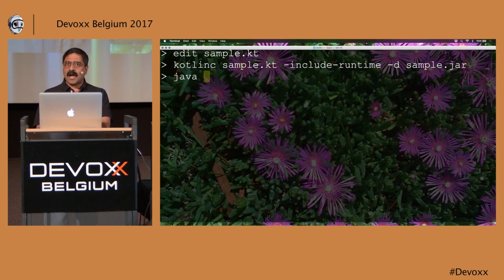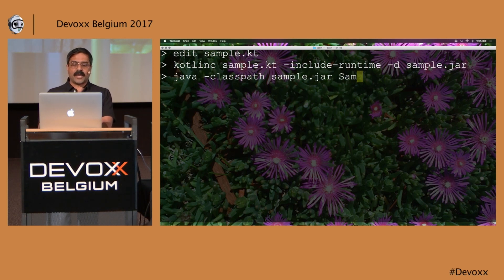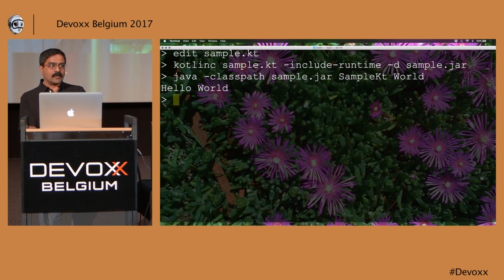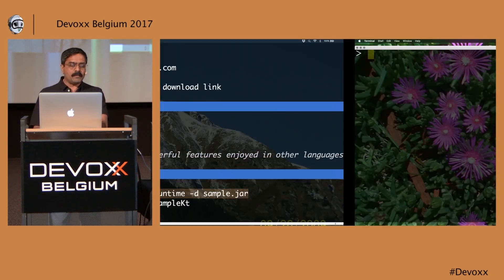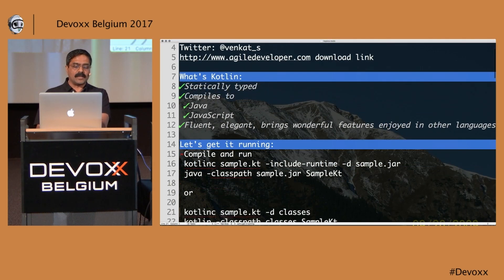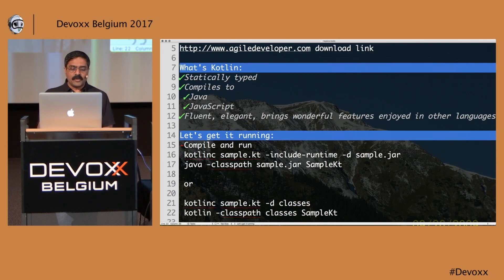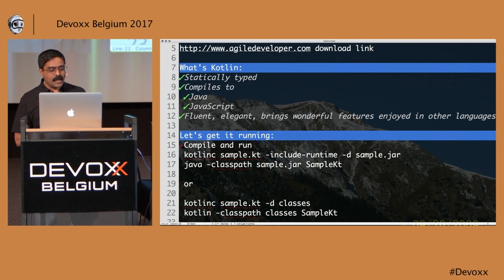Once I do that, I can run this like Java generally. I say classpath, then sample.jar, and then provide the name of the file — in this case sample.kt — and say world, because we want to say hello world to begin with. So that's our Kotlin program running through Java. If you don't want to include the runtime, you can also specify where Kotlin is located, or simply use kotlin without the C and run it directly.